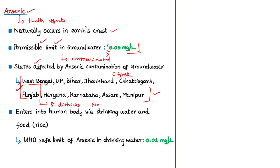In the newspaper you can find the name Nadia, which is one of the arsenic-contaminated districts of West Bengal. Arsenic can enter human beings mainly by two ways: through drinking water, and through the food chain. Several research studies have confirmed that arsenic in groundwater enters the food chain through rice from paddy crops cultivated in arsenic-contaminated regions.